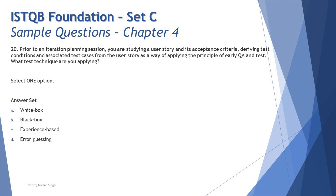Question number 20 says: prior to an iteration planning session, you are studying a user story and its acceptance criteria, deriving test conditions and associated test cases from the user story as a way of applying the principle of early QA. What test technique are you applying? This is a very typical question. If you observed my tutorials, when we were talking about categories of test techniques in section 4.1, I explained all these things. They're not asking about a specific technique like equivalence partitioning or boundary value analysis.